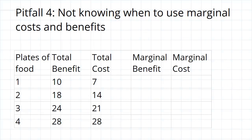Imagine now that you're at a restaurant, and each plate of food they bring you costs you seven dollars. This is your benefit: you would be willing to pay $10 to get one plate of food, $18 to eat two, $24 to eat three, and so on.